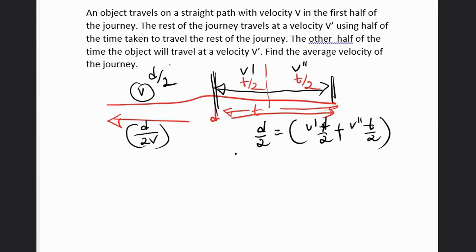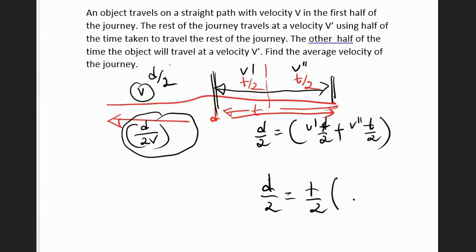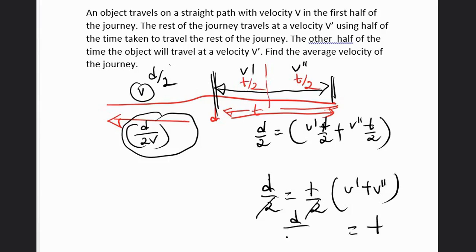Now we have the total time. We have the time for the first half and T. So let's subject T here. T/2 equals — taking T/2 as common — we get V' and V'' over here. We can cancel off the 2s, so we get T equals D over V' plus V''.